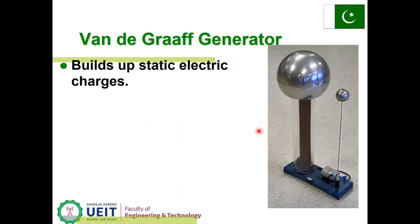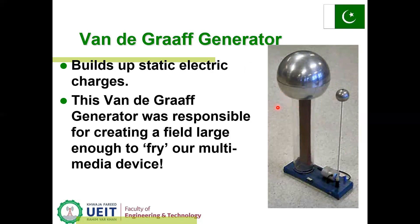A Van de Graaff generator is shown in this figure. There is a big dome or sphere and a small sphere. The big dome is charged by the machine and electrostatic charges accumulate on the dome. The small sphere feels some accumulated charges due to induced charges. If the charge is too much on the big dome, it can damage multimedia devices.